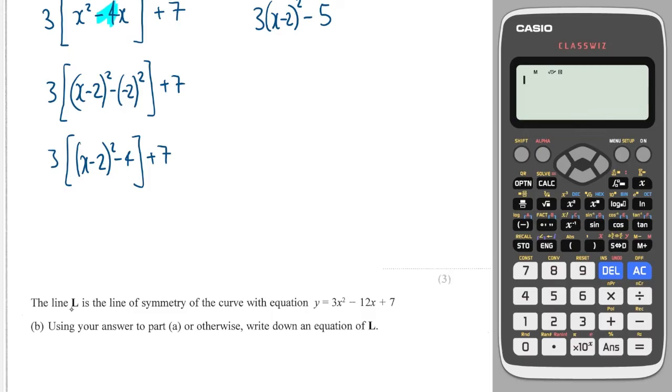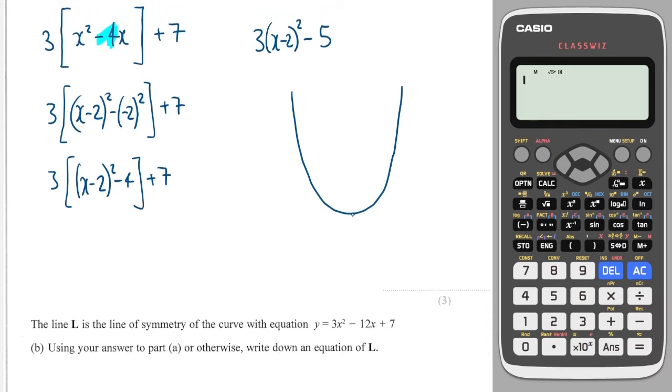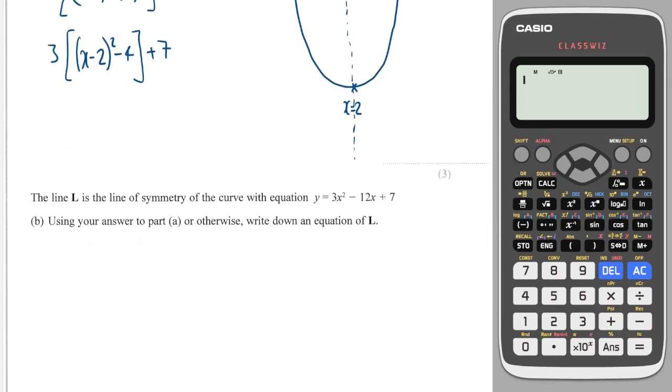The next part says the line L is the line of symmetry of that curve. Using your answer to part A, write down the equation of L. Well, we had a quadratic which will look like this, a U shape, and the minimum point right here can be found by making this bracket in here 0. Because a square bracket can never be negative. You can never get a negative number after you've squared something. So the smallest this blue bracket can be is 0, and the x value that makes it 0 is 2. So x equals 2 will then give me 0 in this blue bracket, so the y value will be minus 5. But more importantly, this is going to be the line of symmetry down that line there, and that is a vertical line, x equals 2.